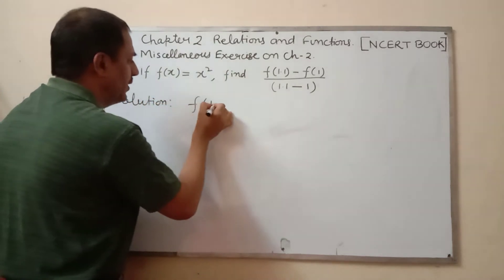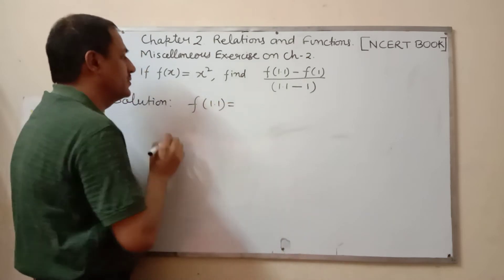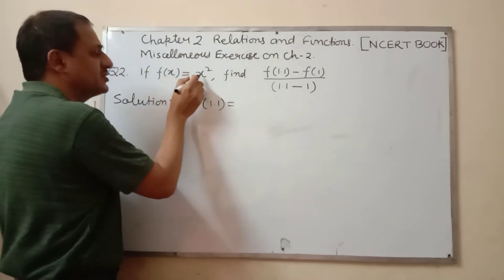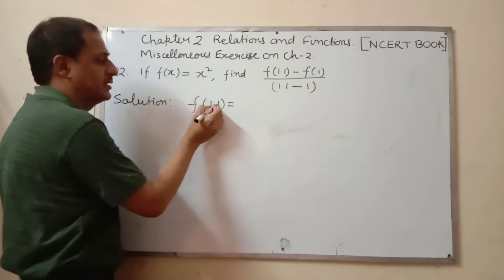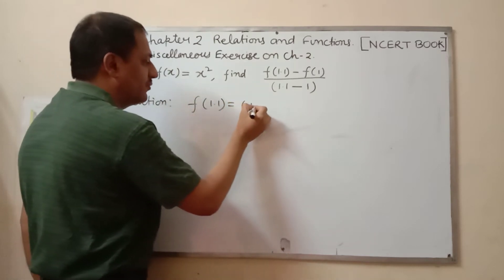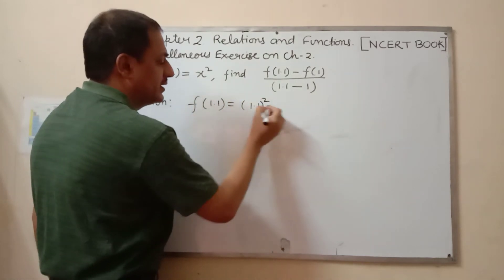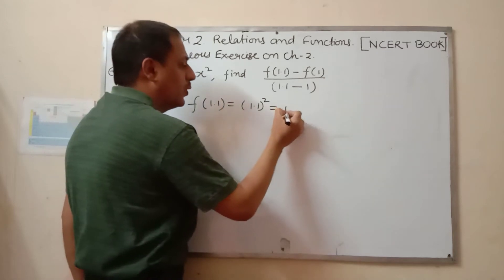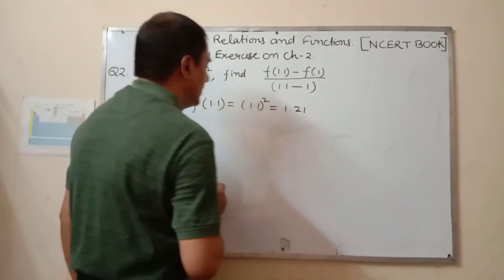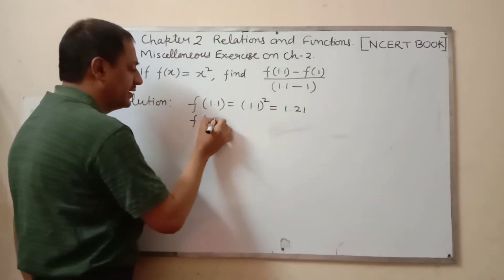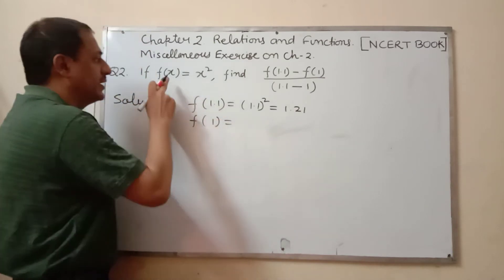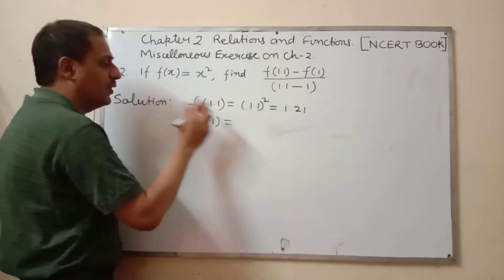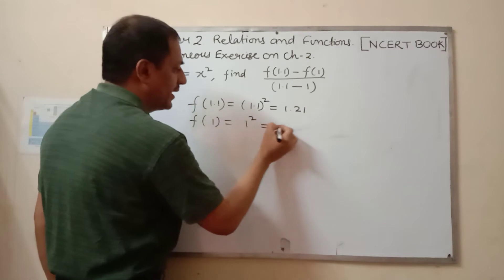f(1.1) is equal to... here f(x) = x², then f(1.1) equals square of 1.1, which is 1.21. And the value of f(1) is equal to... in place of x we will put 1. 1 squared equals 1.